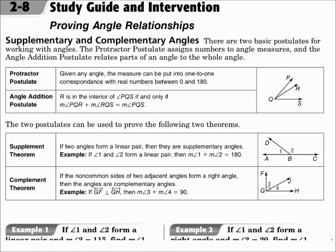The supplement theorem says that if two angles form a linear pair and they make that straight line, then their measures add up to 180. The complement theorem says that if you have two lines that are perpendicular and they make a right angle, then those two angle measures will add up to 90. Supplements add up to 180, complements add up to 90.